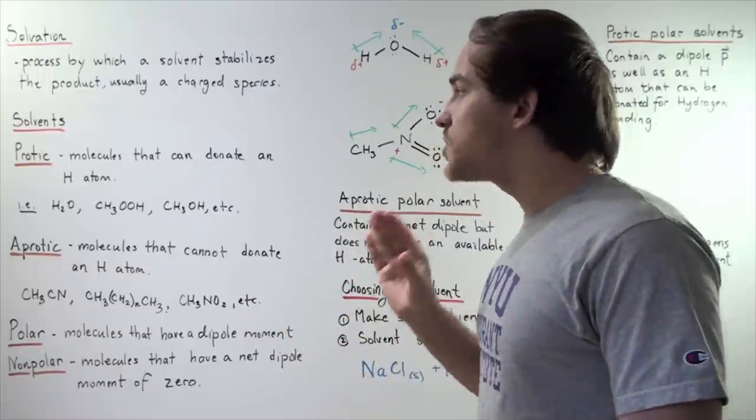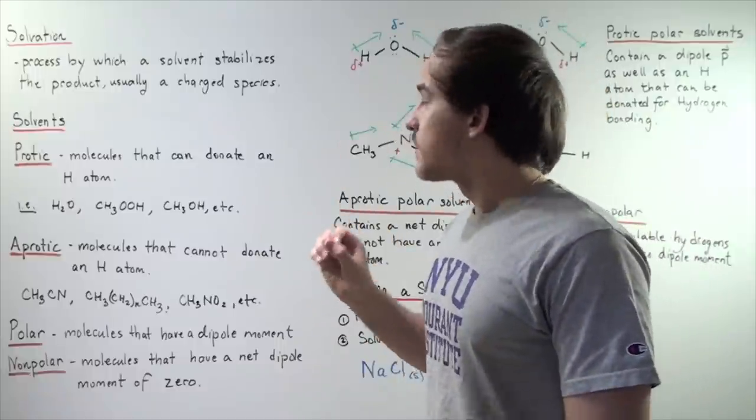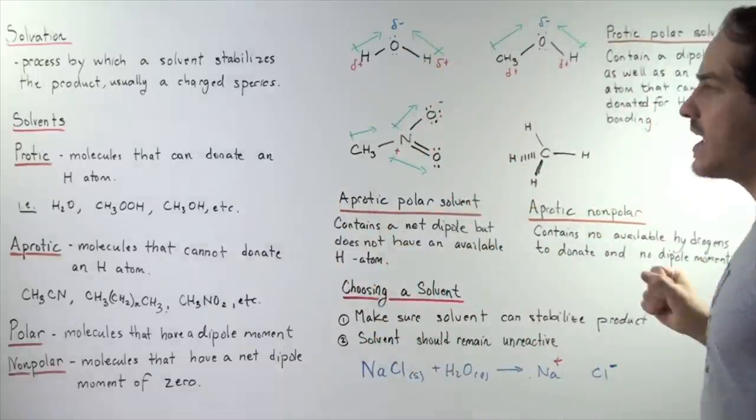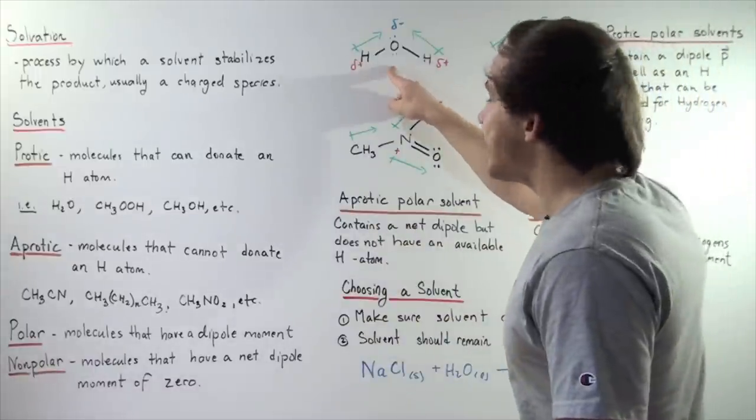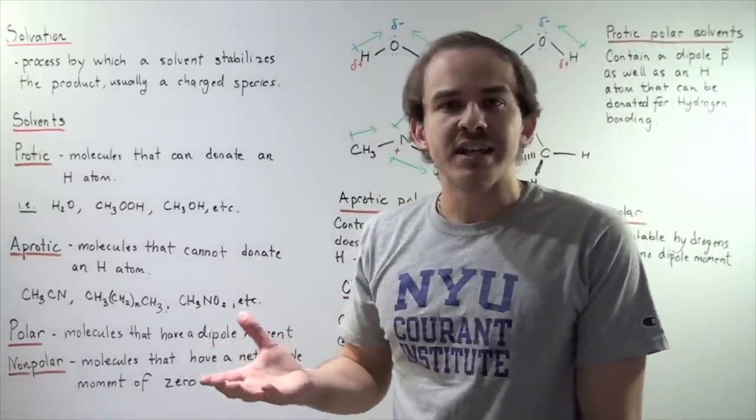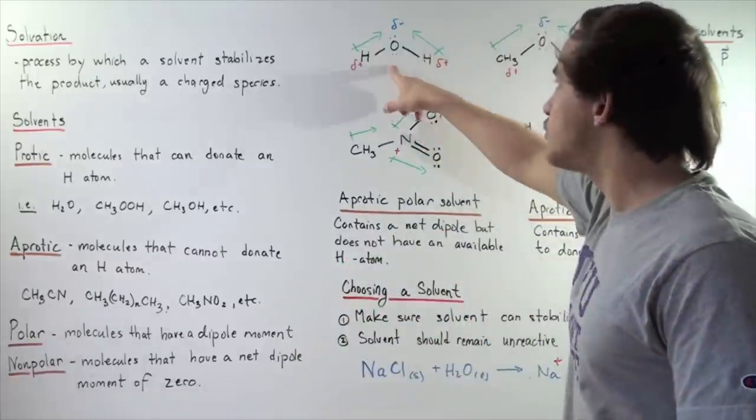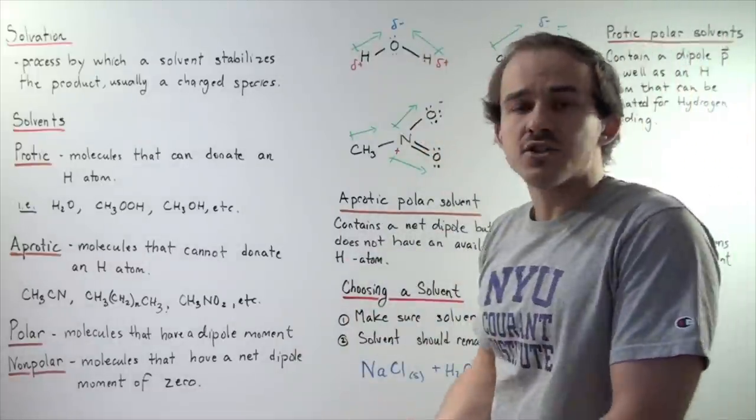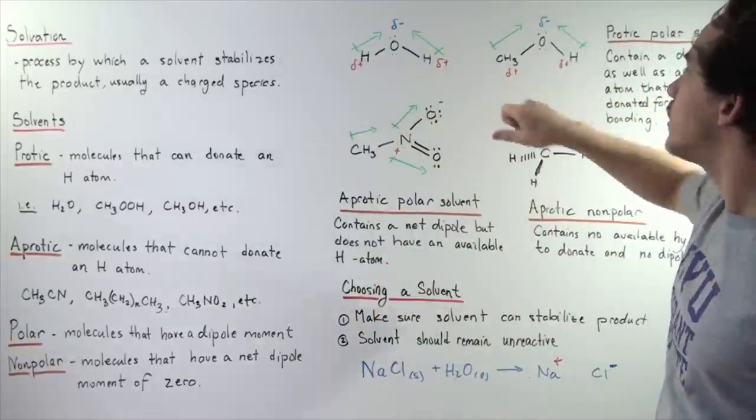Now, most of the protic solvents are polar. So, let's look at the following two examples. Let's look at water and our alcohol. Recall that oxygen is much more electronegative than the H atoms or carbon atoms. So that means the oxygens will pull electrons stronger than either of the H atoms or the carbon atoms.